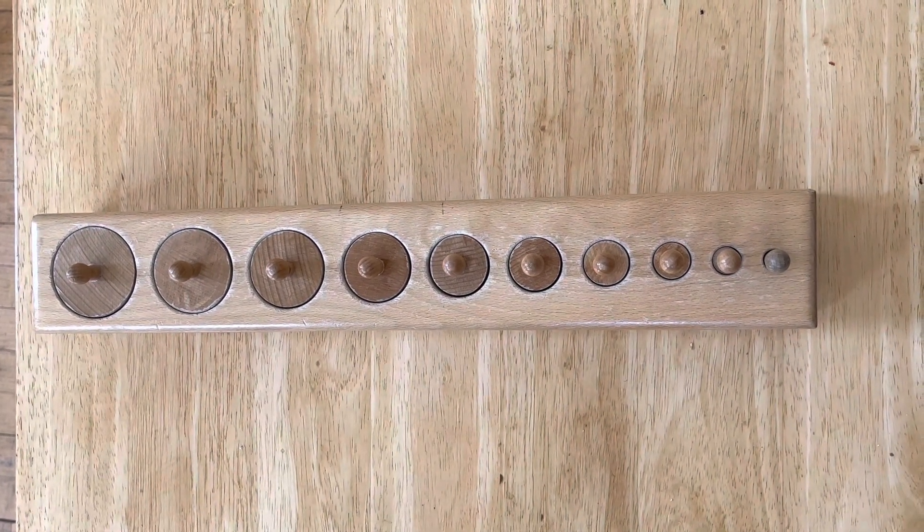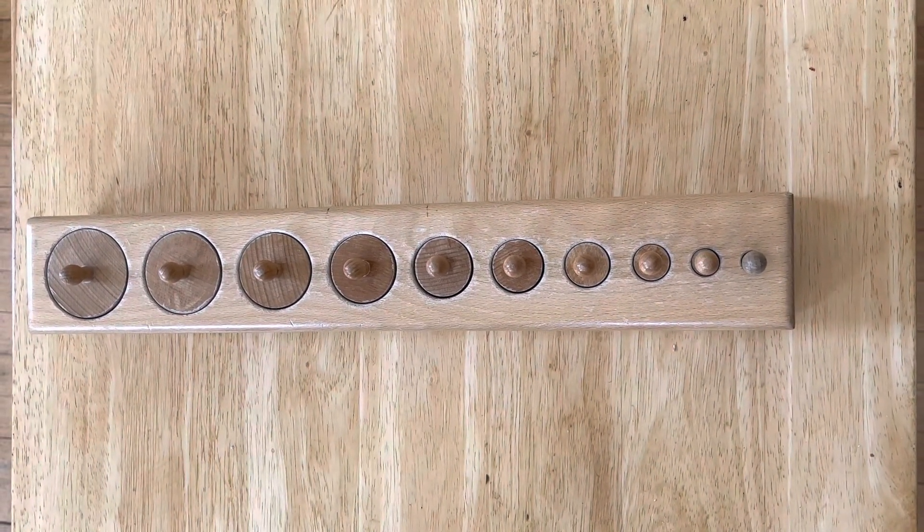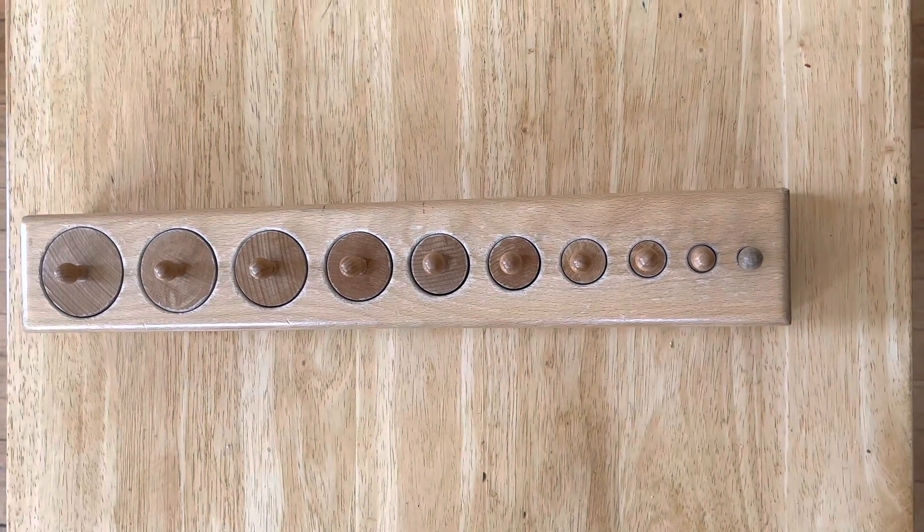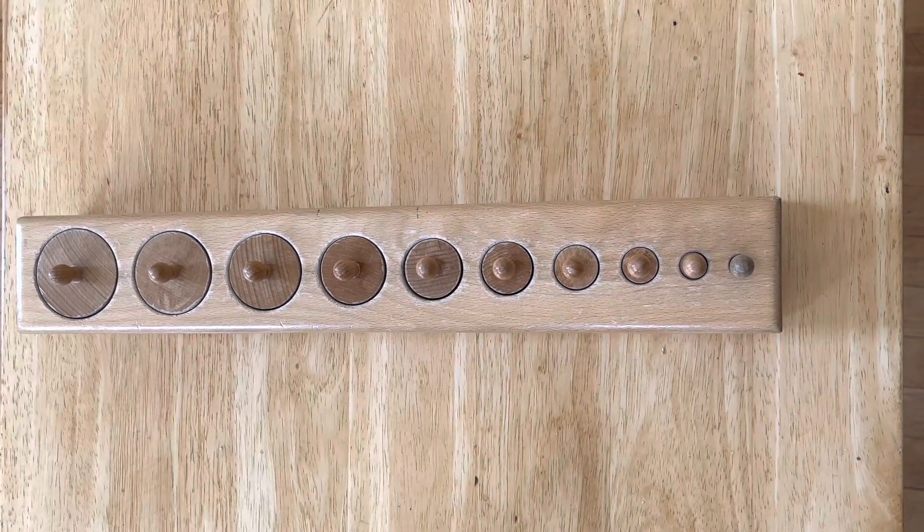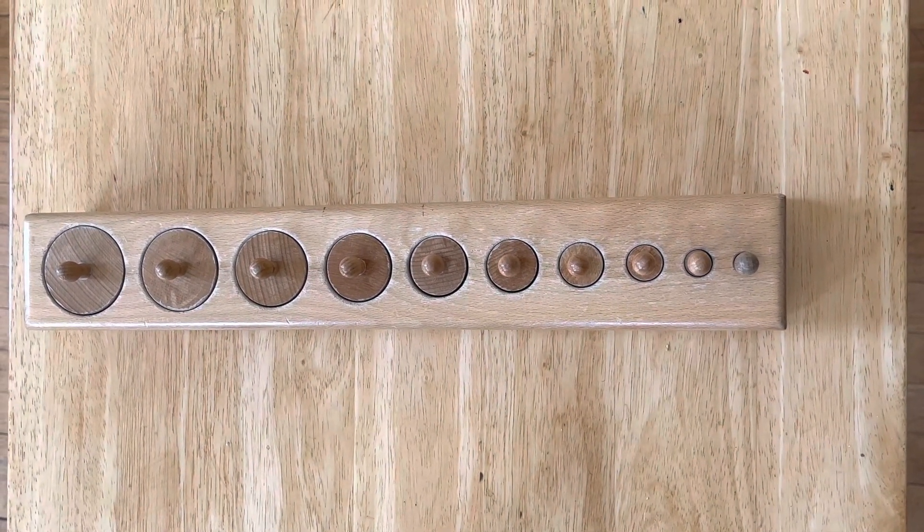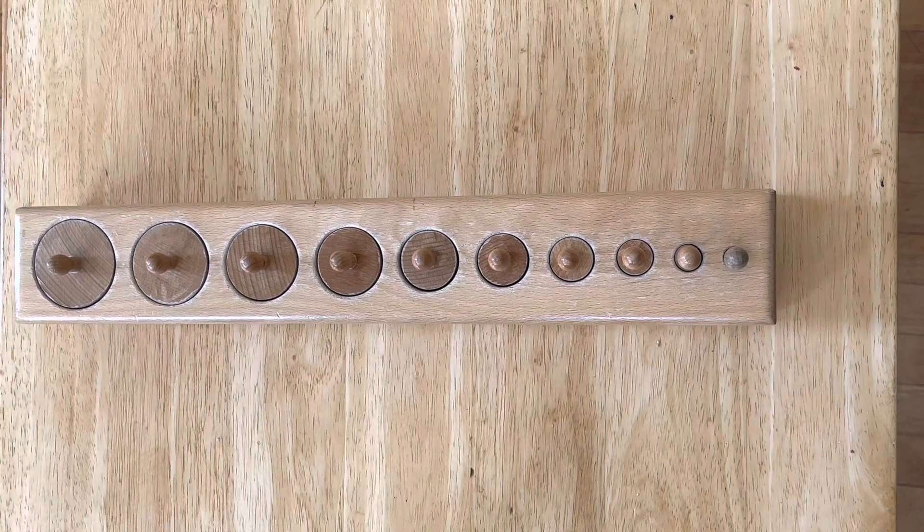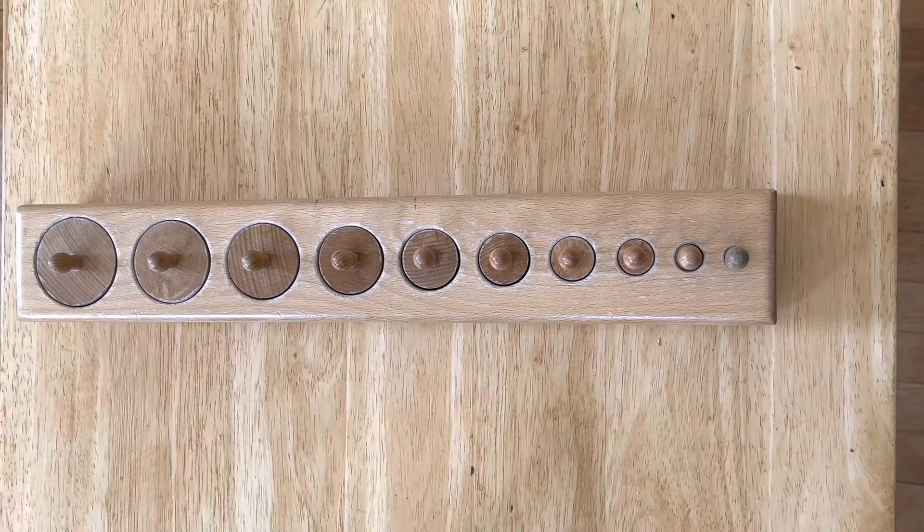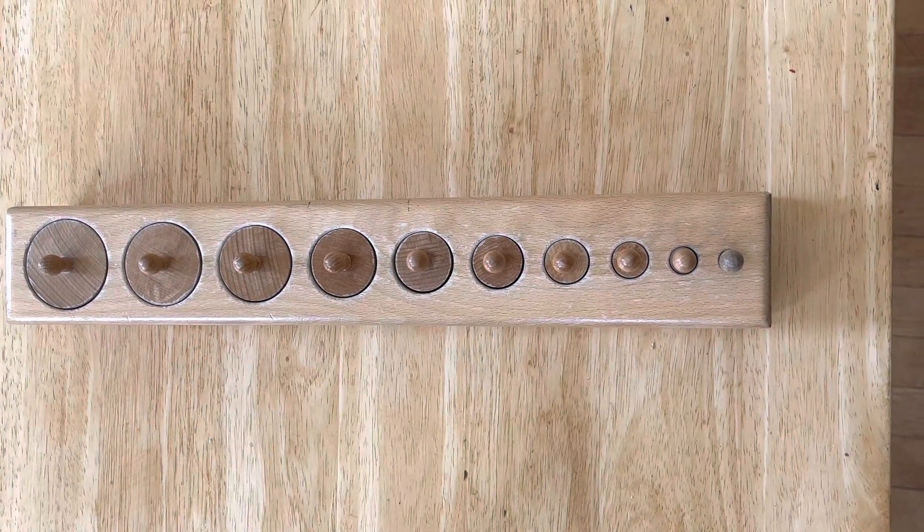This is a Montessori primary activity in the sensorial area of the classroom. There are four wooden cylinder blocks, and this is one of those four. This one in particular happens to be the same height but goes from wide to narrow.